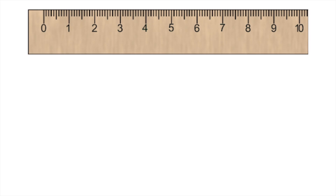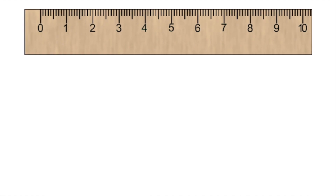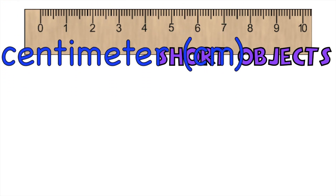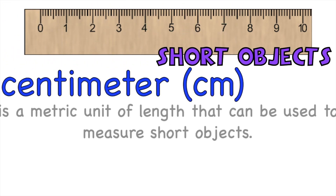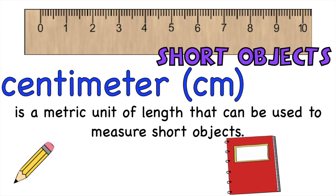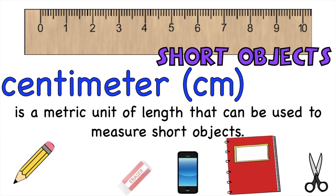One of the most common tools in measuring length is a ruler. We use a ruler in measuring short objects. The centimeter or CM is a metric unit of length that can be used to measure short objects like notebook, pencil, cell phone, scissors, eraser, and paper clip.